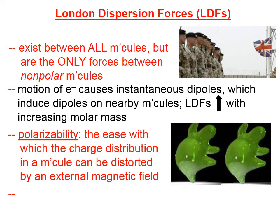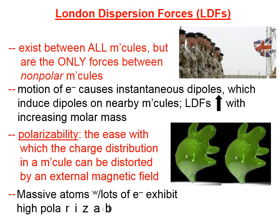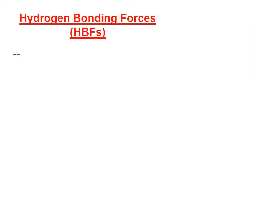Polarizability is a term that deals with the ease with which the charge distribution can be distorted — the ease with which we can distort the electron cloud, the electron flubber cloud. Massive atoms with lots of electrons exhibit high polarizability. In other words, if you only have a little flubber, instantaneous dipoles are not very strong. If you have a lot of electron cloud flubber — and you would if you were a rather massive atom like iodine — then that cloud can shift a lot more, causing stronger instantaneous dipoles.